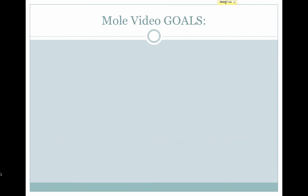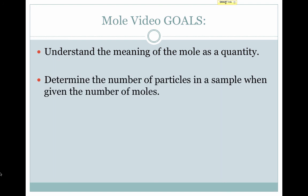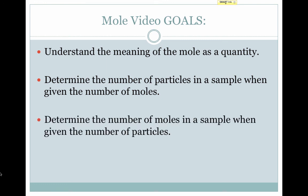That brings us to the end of the mole video. Let's review our goals. First, we looked at the meaning of the mole as a quantity — a dozen is always 12 of something, just like a mole is always 6.02 times 10 to the 23rd of something. Then we looked at how to determine the number of particles in a sample when given the number of moles, and then how to determine the number of moles in a sample when given the number of particles.